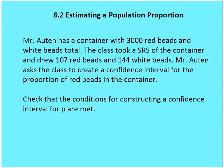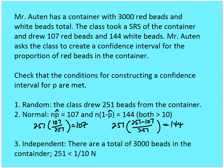Let's go through an example. Mr. Otten has a container with 3,000 red and white beads total. The class took a simple random sample and drew 107 red beads and 144 white beads. We want to check the conditions for constructing a confidence interval for P. Random: the class drew 251 beads. Normal: np and n times (1 minus P hat) are both greater than 10. Independent: 251 is less than one-tenth of 3,000. So all conditions are met.